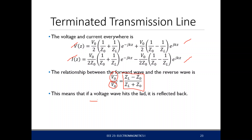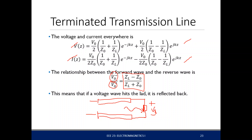So, if we have a transmission line terminated by some load Z sub L, a forward traveling wave hits this Z sub L, creating a voltage V sub 0 and a current I sub 0. As a consequence, a backward or reverse traveling wave is created, and it collides with the forward traveling wave. In general, when a transmission line is connected with a load, a voltage wave hits the load and some of it is reflected back to the source.